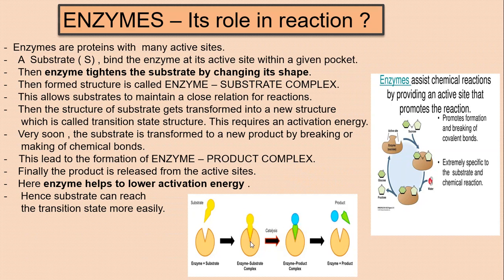The enzyme lowers the activation energy, so the substrate can easily convert into a transition state. Then the enzyme with the transition substrate forms the enzyme-product complex. From the enzyme-product complex, the products are released from the enzyme. That is the role of the enzyme.